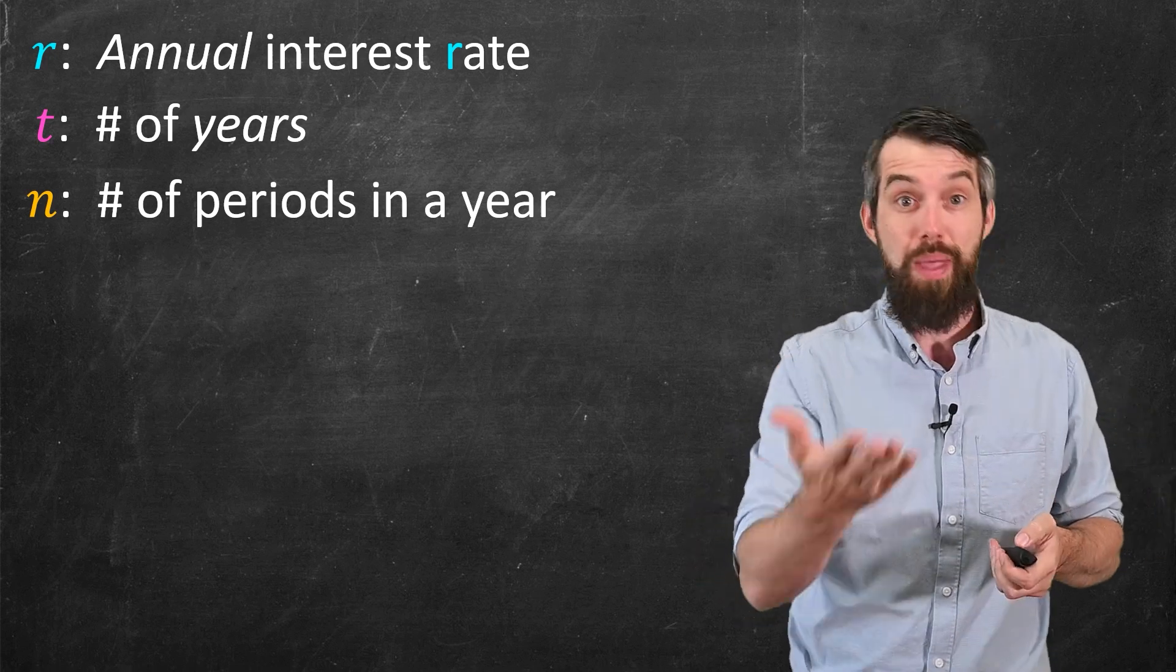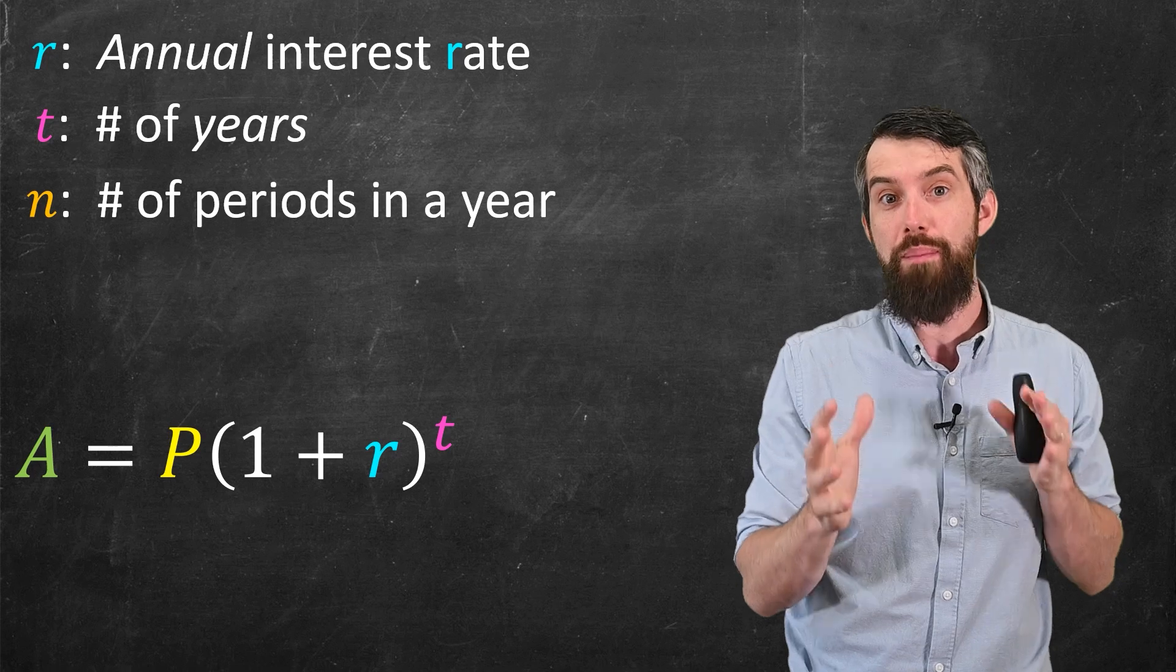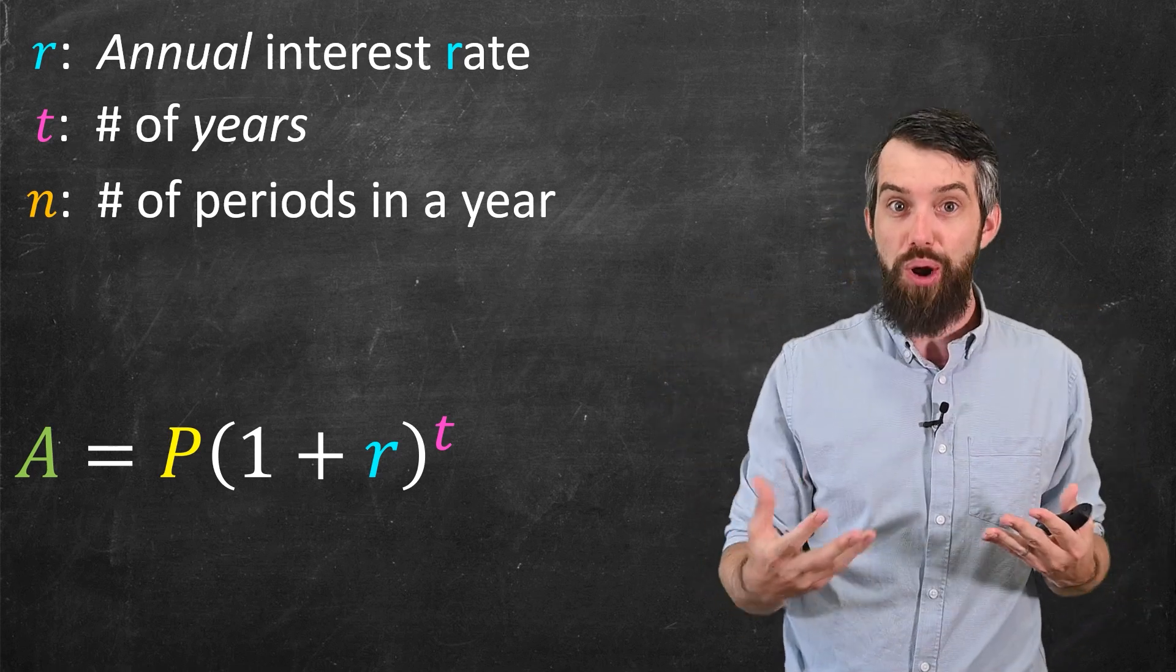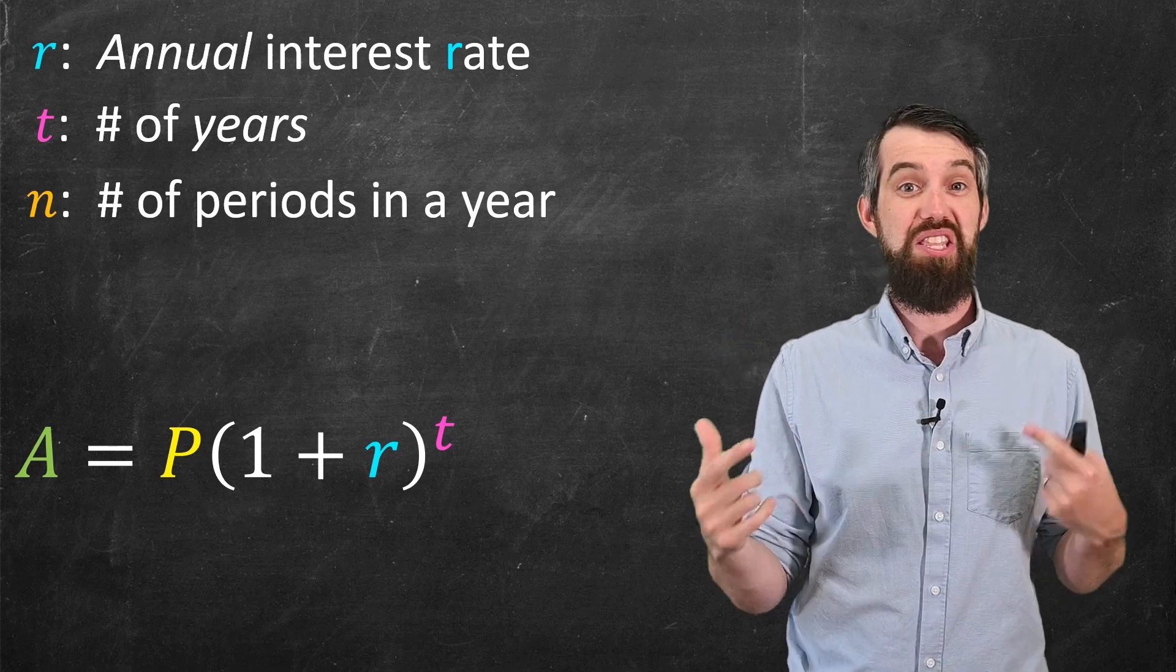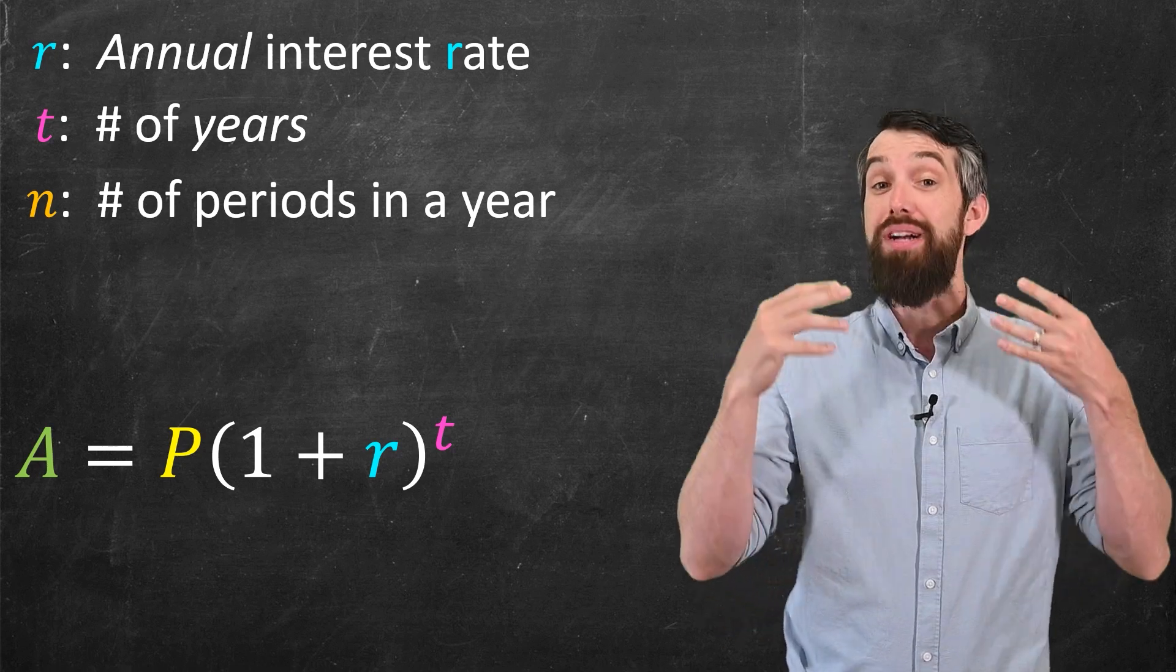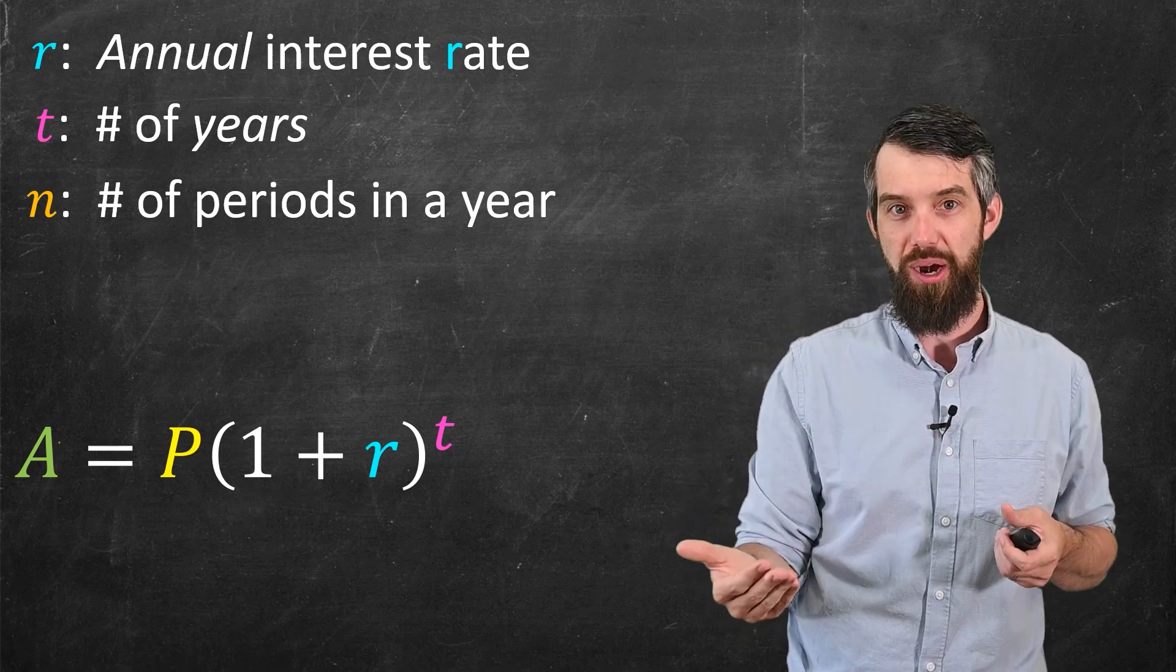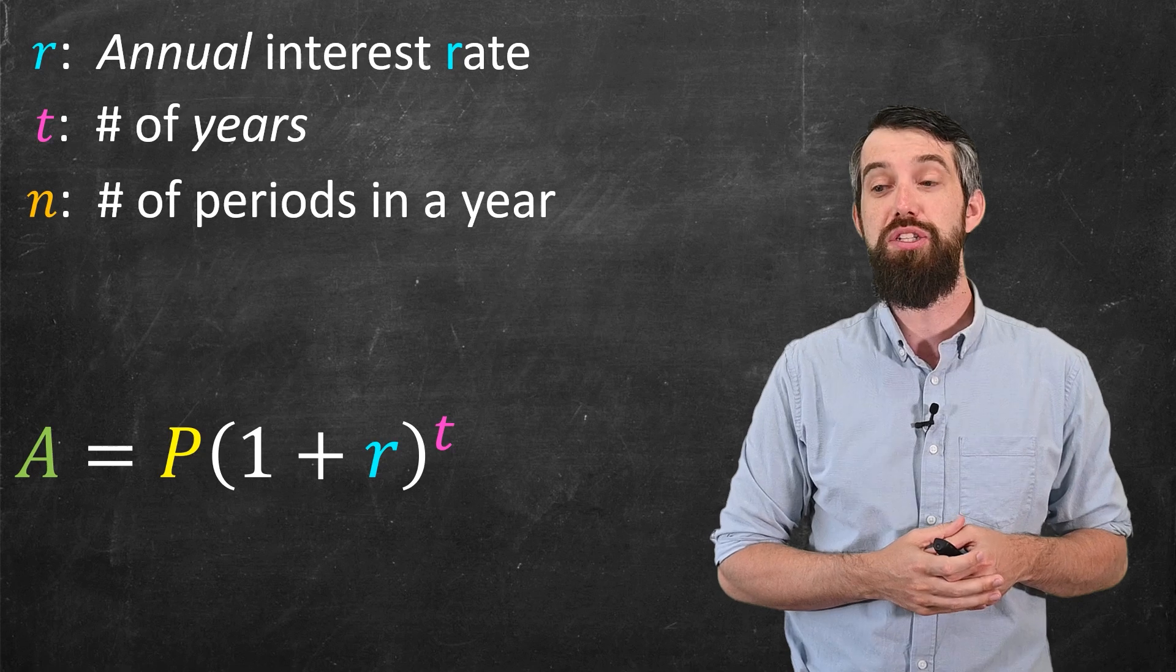Now, the old formula, so I haven't made adjustments to it yet, the old compounded interest formula was this. P times 1 plus r to the power of t. And basically, this formula is the n equal to 1 case. But I need to see how to adapt this if you have multiple periods in a given year.